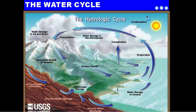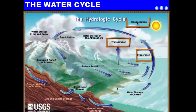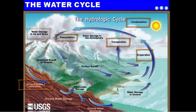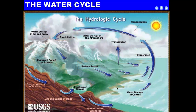The water cycle is a series of events where water changes forms and goes to different places. The different stages we're going to cover are evaporation, transpiration, condensation, precipitation, surface runoff, storage, and infiltration. We'll touch on storage and infiltration a little bit, but we'll spend more time on the other phases of the water cycle.